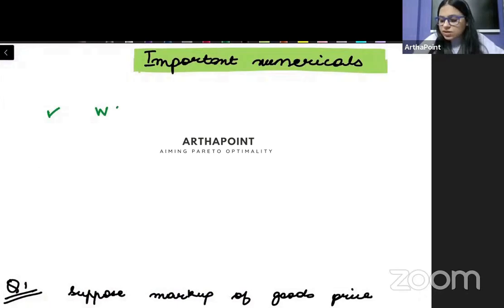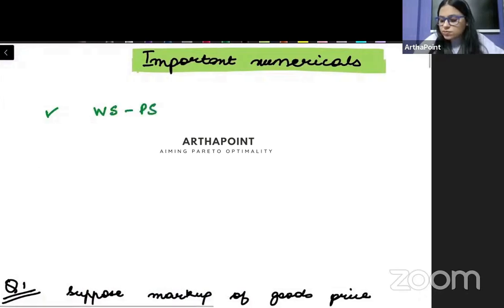The first numerical can be on weight setting, price setting relationship. It's an important topic and a numerical can be asked on this. The second numerical that can be asked in exam is related to your Phillips curve, Okun's law. I'll show you an example for each. So Phillips curve, Okun's law numerical can be asked in exam.